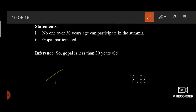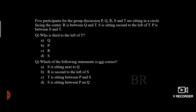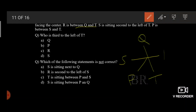This is a true or false question — you can easily make it out by one reading. Five participants for the group discussion — P, Q, R, S and T — are sitting in a circle facing center. S is sitting second to the left of T. P is sitting between S and T. R is between Q and T. Who is third to the left of T? The answer is Q.